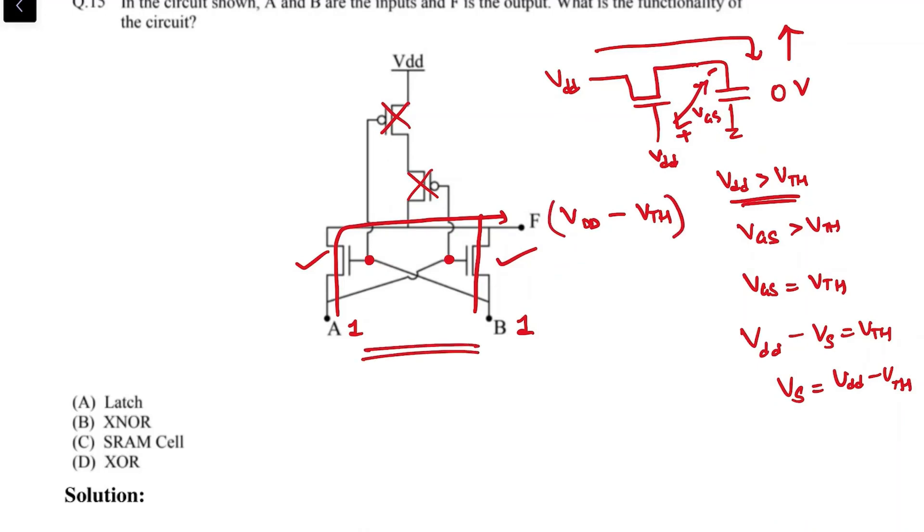But we are probably asked to assume that the transistors are ideal, and so therefore this output can also be treated as a logic one. That is, the assumption is that VDD is far greater than Vth, and so this does not cross the logic one boundary.